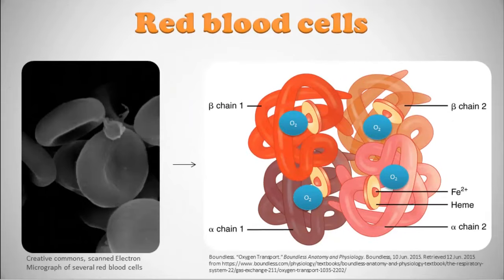Looking at the picture, on the left is a scanning electron micrograph of red blood cells. On the right is one hemoglobin molecule — and just imagine there are 250 million of these in a single red blood cell. You can see the globin protein structures that hold the hemoglobin together, and the heme and iron sections where four oxygen molecules are held for each hemoglobin.